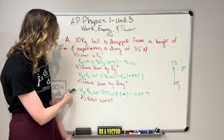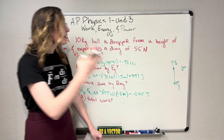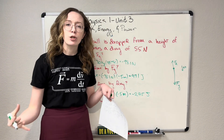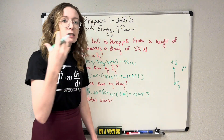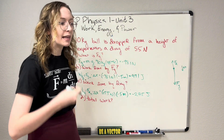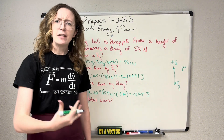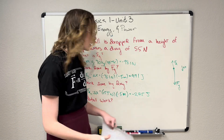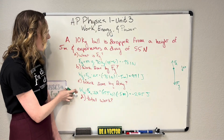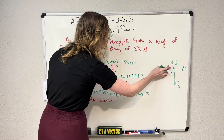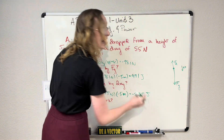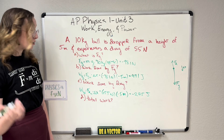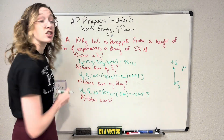We have a negative value for work — what does that mean? It means that our drag is doing work that takes energy away from our cannonball, and that makes sense intuitively: air resistance is slowing down the cannonball, making it fall slower. Something that is slowing an object down should give it less energy, so our force due to drag is doing negative work — it is taking energy away.